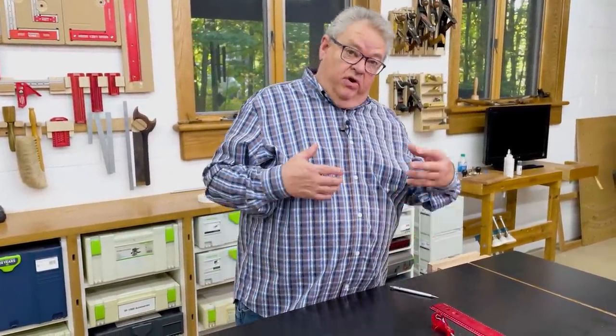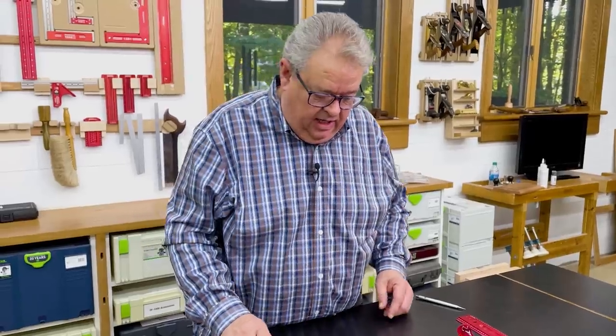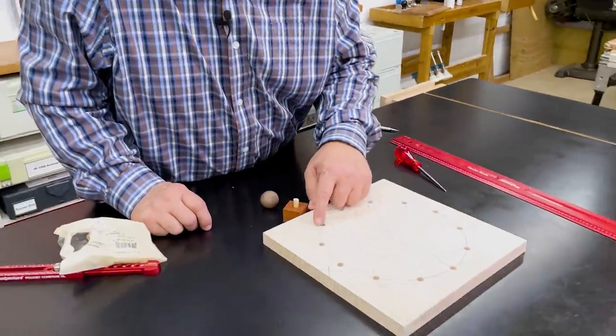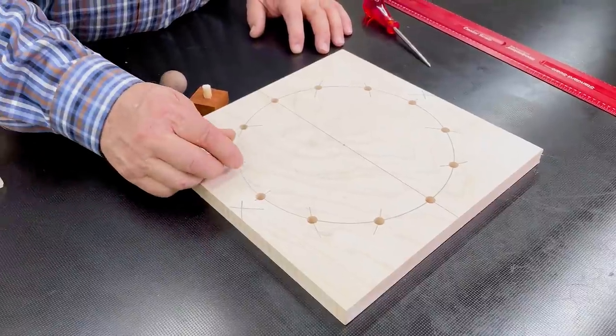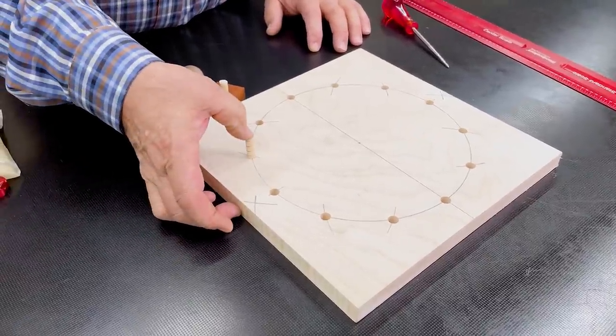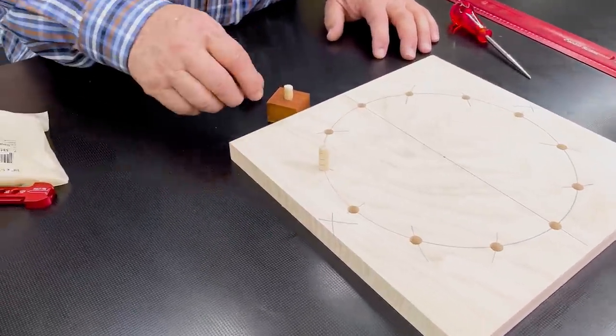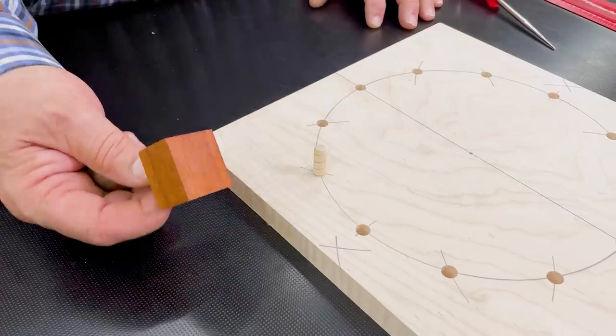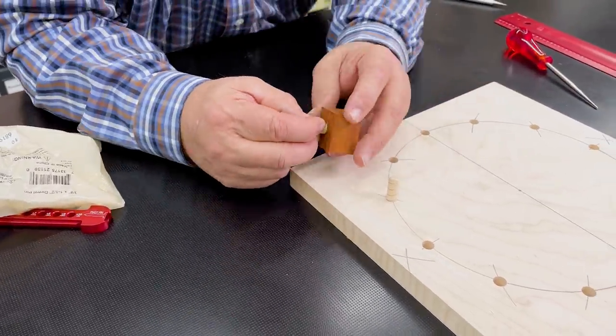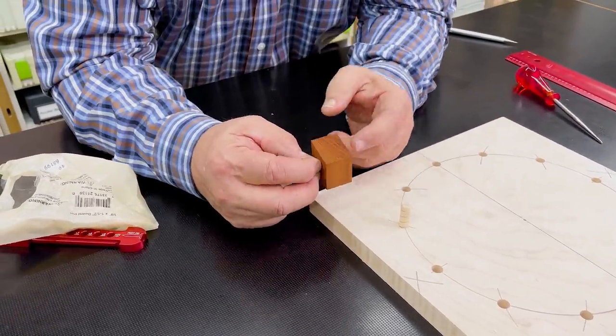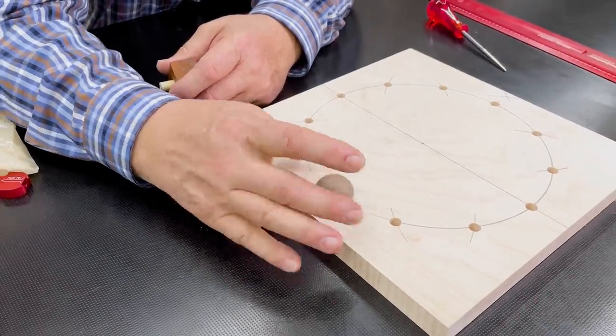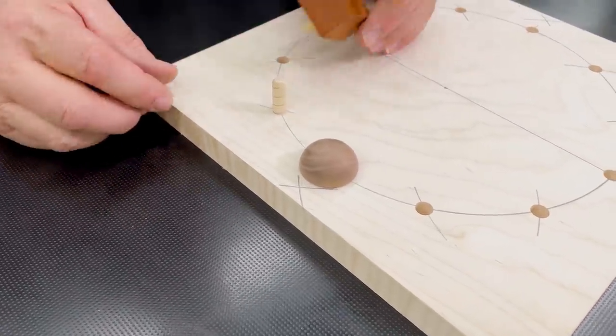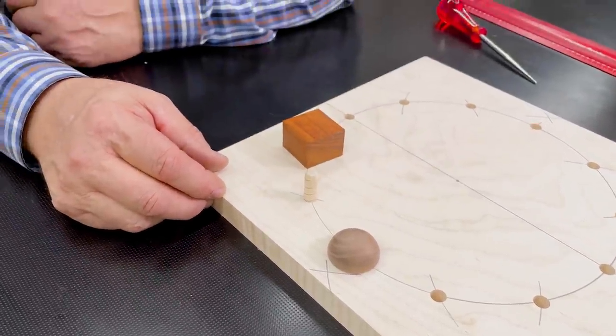So once we have it drilled we have all kinds of options on how we can create the numbers on the clock. You could just take a colored dowel, put it in there, sand it off flush and be done with it. What I did was I used dowel pins like this and I glued up the blocks as squares. Then I put those in the lathe and I turned them into spheres or half spheres.